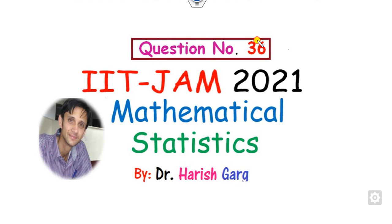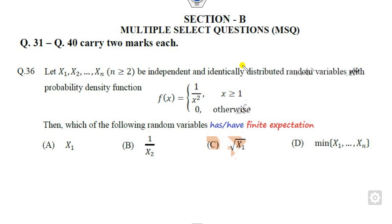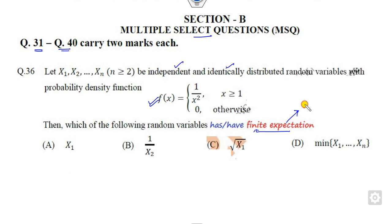Welcome to the next lecture on question number 36 related to IIT JAM 2021 Mathematical Statistics. This question consists of multiple choice answers where more than one option may be correct, as it belongs to Section B. It is related to identical and independent distributions — some probabilities are given, and you have to check whether they have a finite expectation or not.